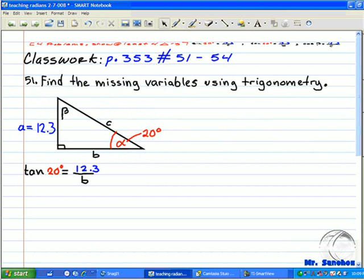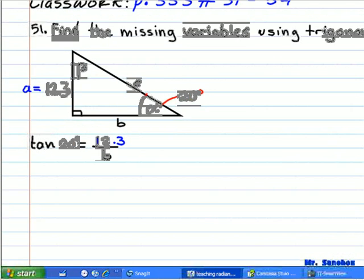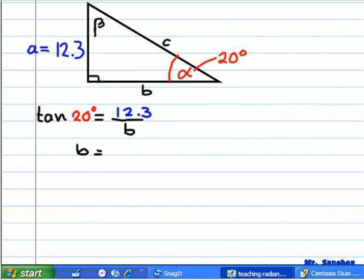This equation of tangent can be solved using algebra. Using algebra, we can rewrite this in another way. By cross-multiplying, we can state that the tangent of 20 degrees times B is equal to 12.3.